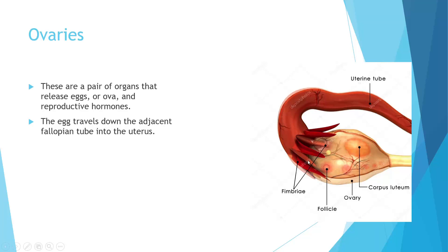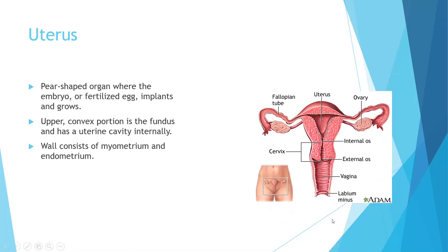These little fimbriae — finger-like projections — kind of suck up the egg, and it travels through the fallopian tube down to the uterus, where it looks to hopefully implant if it meets with the sperm and becomes a blastocyte. The corpus luteum is what's left over after the egg is released, and that's actually what will sustain the pregnancy until the placenta has developed. The uterus is this pear-shaped organ, and the lining — this interior portion — will thicken every month in preparation for a fertilized egg to implant in.